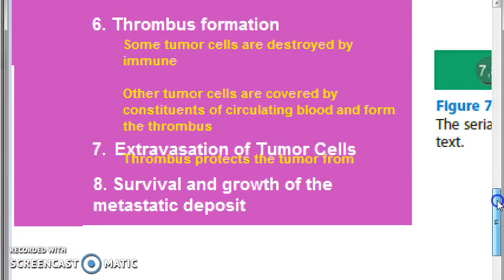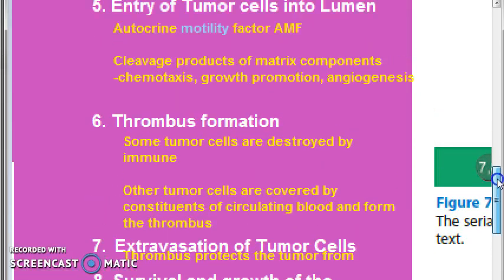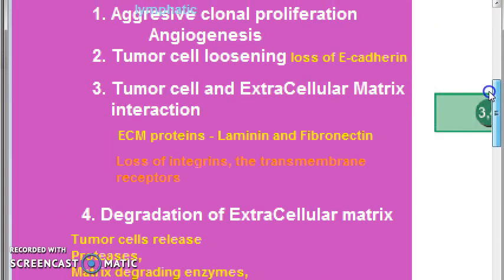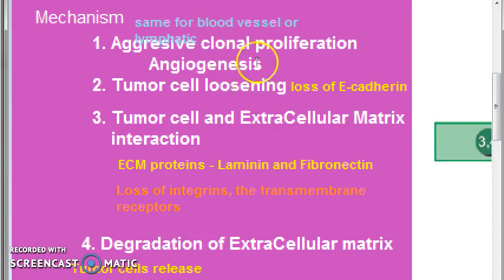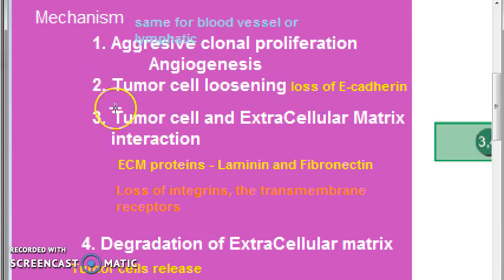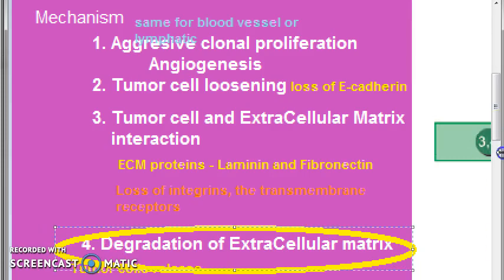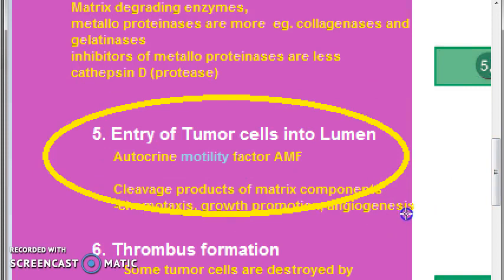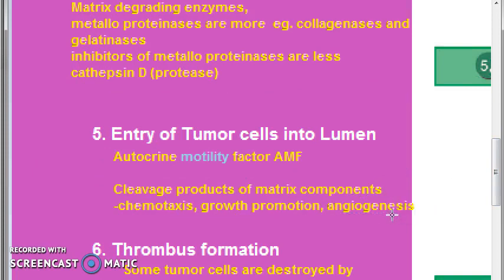The remaining steps — thrombus formation, extravasation, and survival and growth of the metastatic tumor — will be covered in the next video. To revise what we covered here: aggressive clonal proliferation and angiogenesis, tumor cell loosening, interaction with the extracellular matrix, degradation of the extracellular matrix, and entry into the lumen. Continue in the next video.